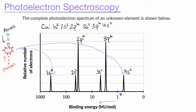If someone were to ask about valence electrons, that would correspond to the outermost spike — the spike of electrons with the lowest binding energy. They have the lowest binding energy because they're the furthest out. They're the easiest to knock off, and because they're the easiest to knock off, more of that photon energy is left over after overcoming the binding energy and gets converted into kinetic energy, so those electrons get deflected further.